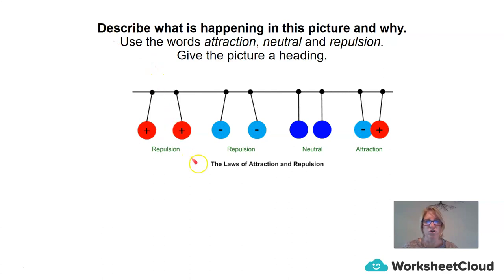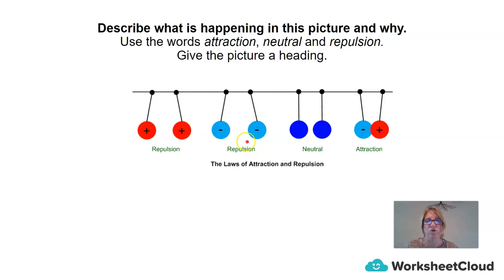This diagram shows the laws of attraction and repulsion. Two positive charges are like charges and will repel each other. Similarly, a negative charge and a negative charge are like charges and show the law of repulsion. Two neutrally charged balls show neither repulsion nor attraction. When one surface is negatively charged and one is positively charged, they show forces of attraction — opposite charges attract.